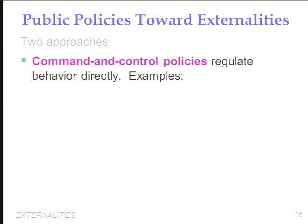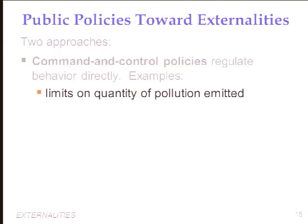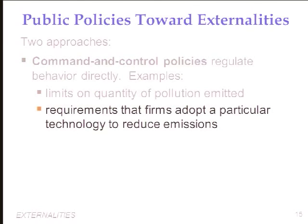Over time, those command and control policies turned out to be very costly and very inefficient. Economists stepped forward and said there is a better answer: change incentives in the private sector so that agents take into account the costs they impose on bystanders or the benefits they generate. The command and control policies specified limits on the quantity of pollution emitted. The classic example: electric utility companies burning high-sulfur coal were told they must install scrubbers, rather than being given incentives to find better, more cost-reducing technologies. The second thrust is market-based policies.